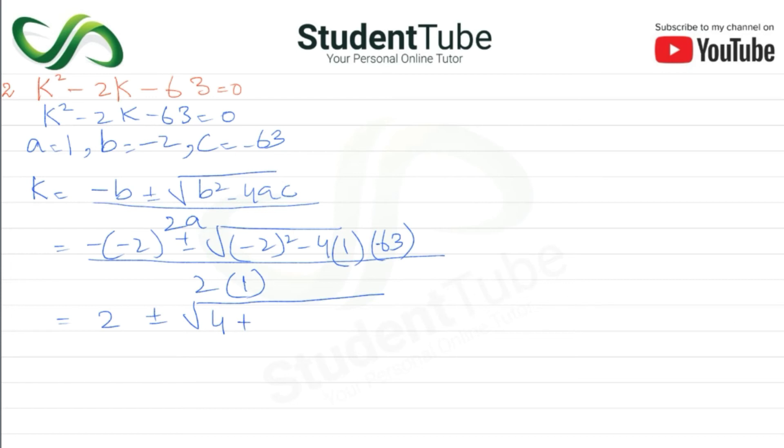So now here 2 plus minus, this plus, so this will be 256 upon 2. Okay, so now this square root is what will happen? 2 plus minus 256 square root is 16, I mean 26.